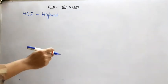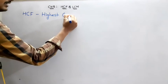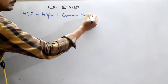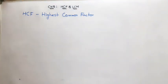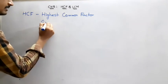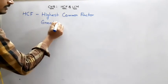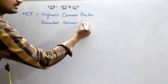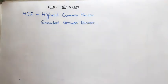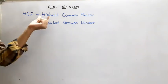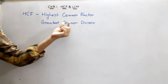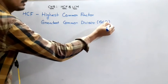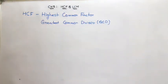In HCF, H indicates highest, C indicates common, and F indicates factor. It is also called greatest common factor, and it is also called greatest common divisor — GCD. Even GCF is also used. HCF means highest common factor or greatest common divisor. So if someone asks you to find HCF or GCD, the procedure is the same.